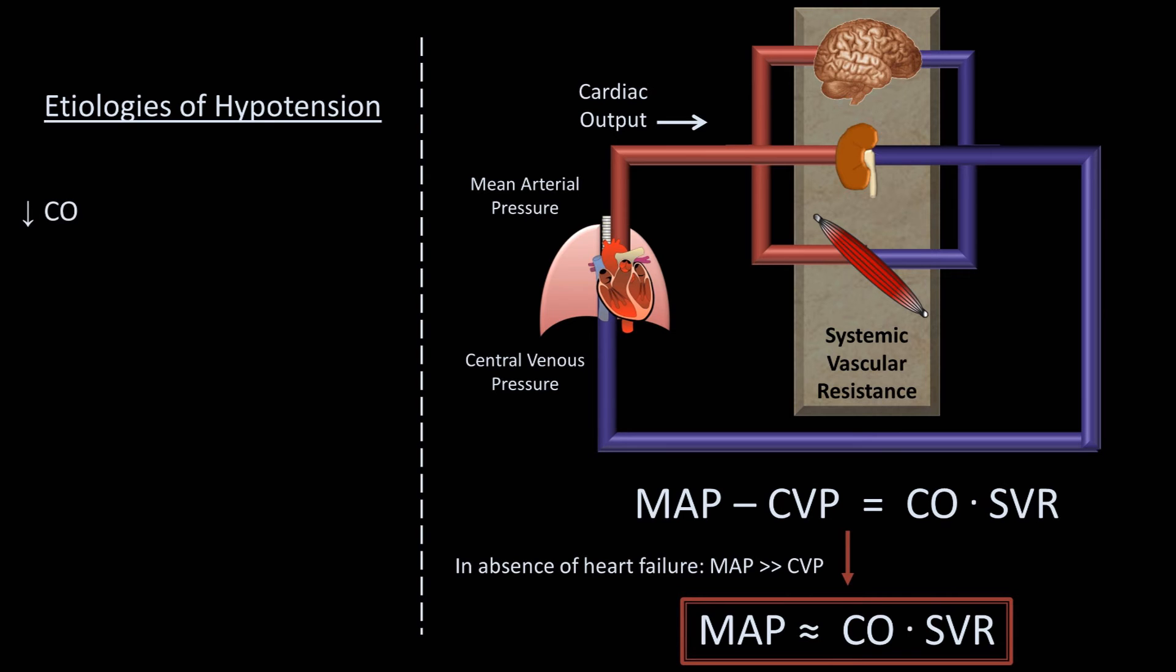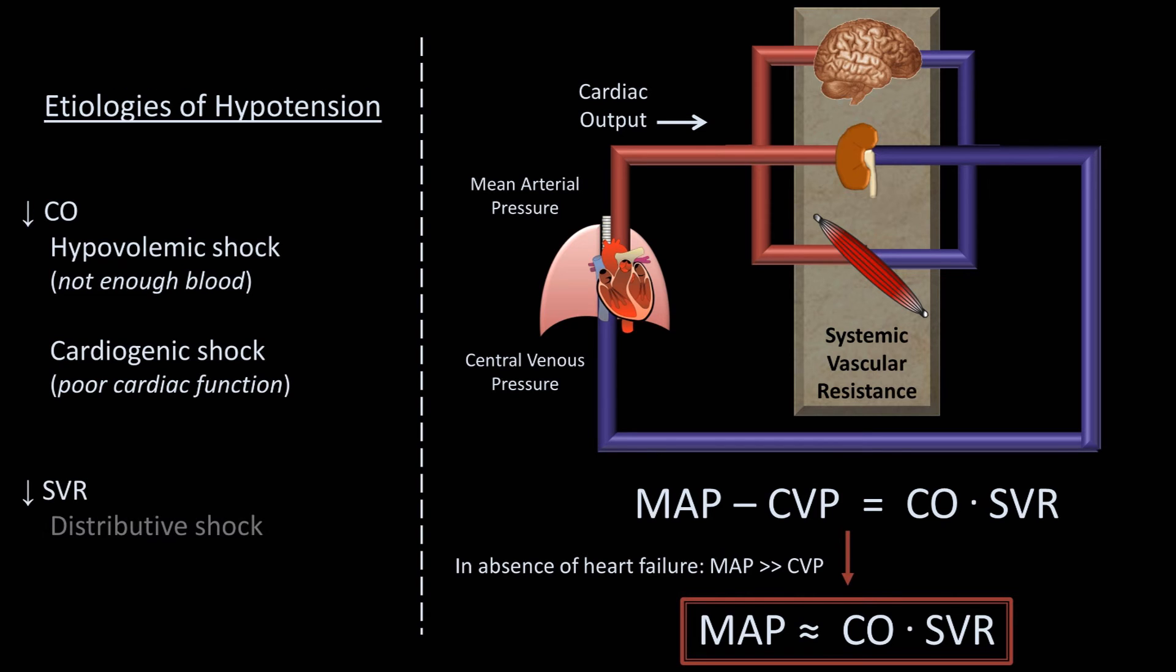Low cardiac output can be a consequence of either hypovolemic shock, where there is not enough blood, or cardiogenic shock, where the primary functioning of the heart is poor. Low SVR is caused by something called distributive shock, where blood vessels pathologically dilate. This is most commonly seen in severe infection, where it is known as septic shock, as well as seen in anaphylaxis.